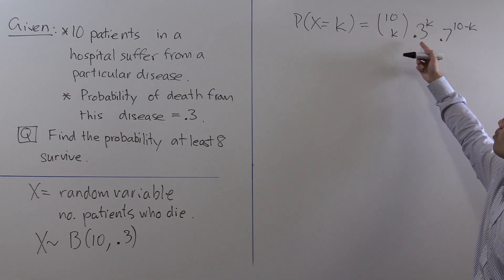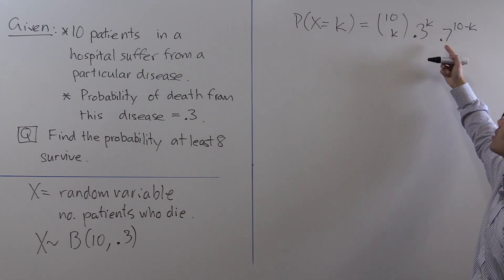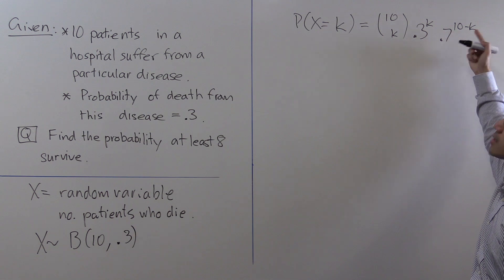Well, the first k dying is 0.3 to the k, and the last 10 minus k surviving is 0.7 to the 10 minus k.